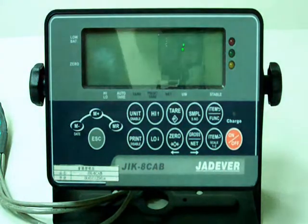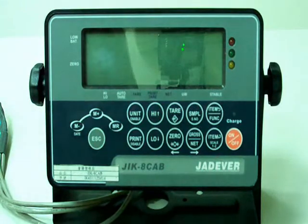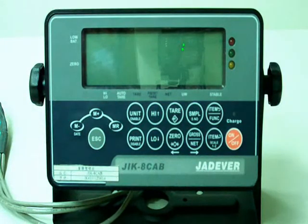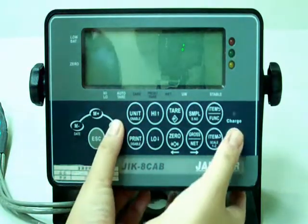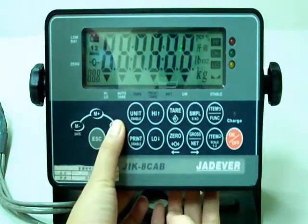JIK8 Single Point Calibration for Weight. Step 1. Enter into calibration mode. Turn on the scale by holding down MR key until CIP is shown on the lower left screen.